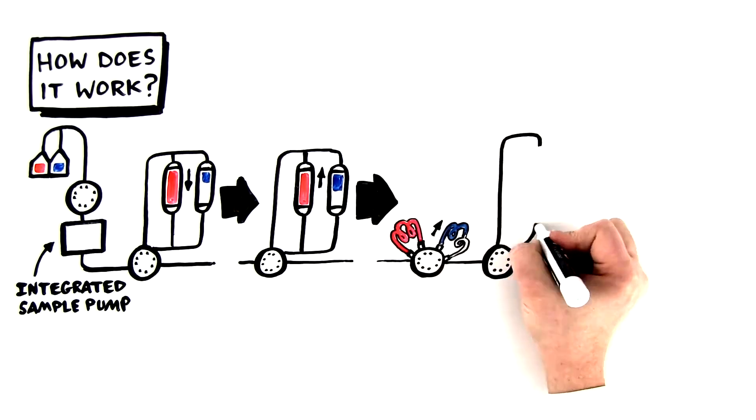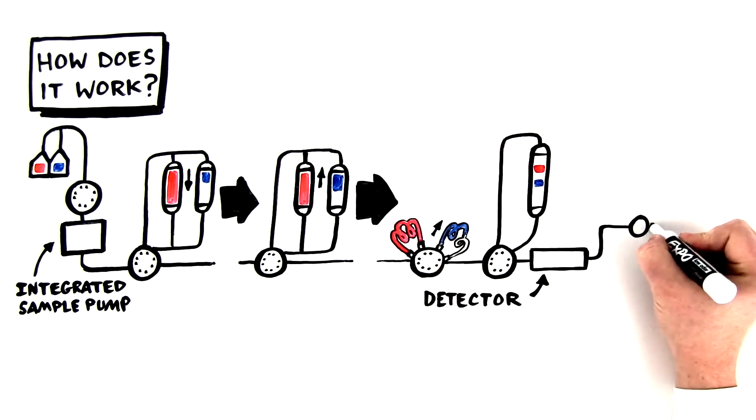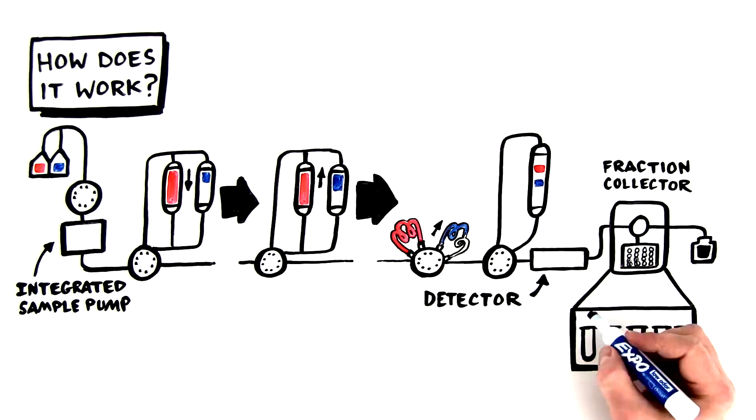Finally, once the column has been equilibrated, the sample is injected, further purified, detected, and collected by a fraction collector. The best part?